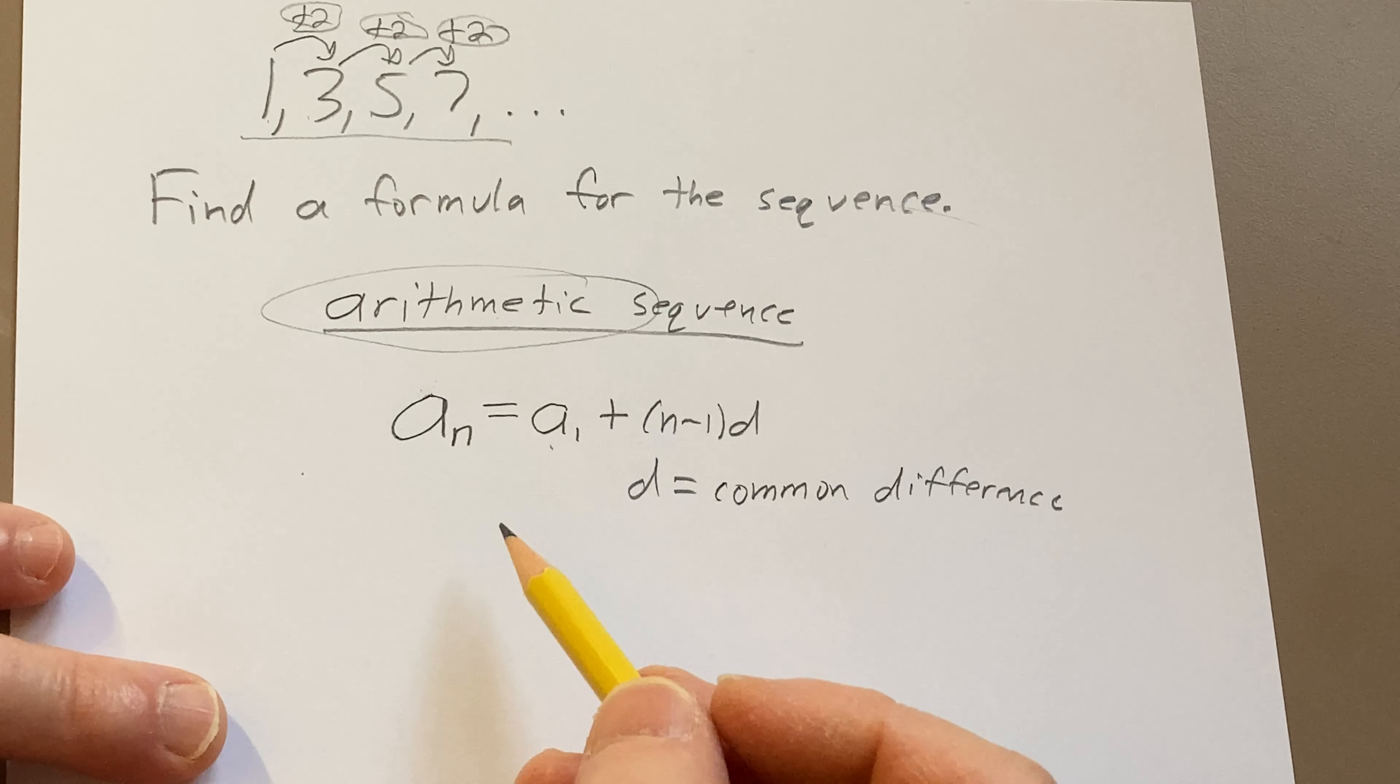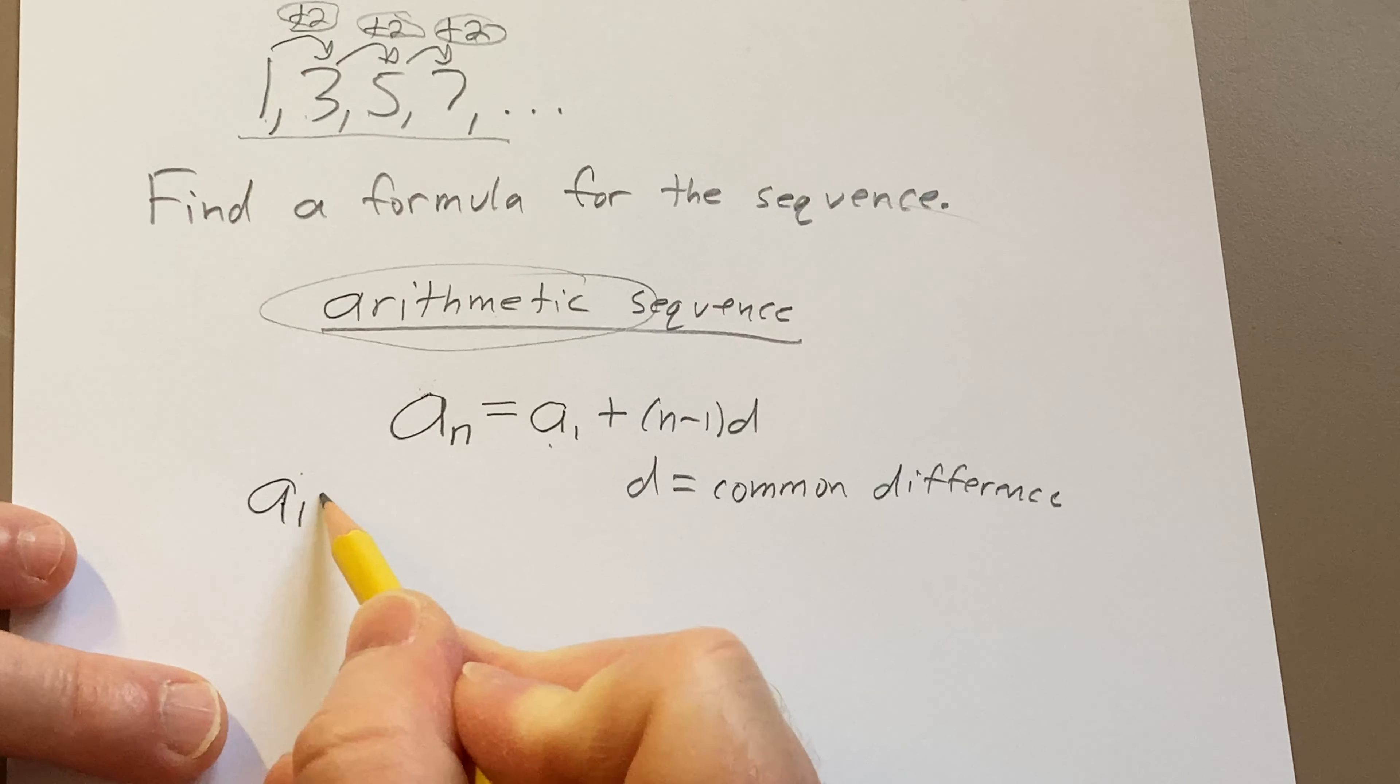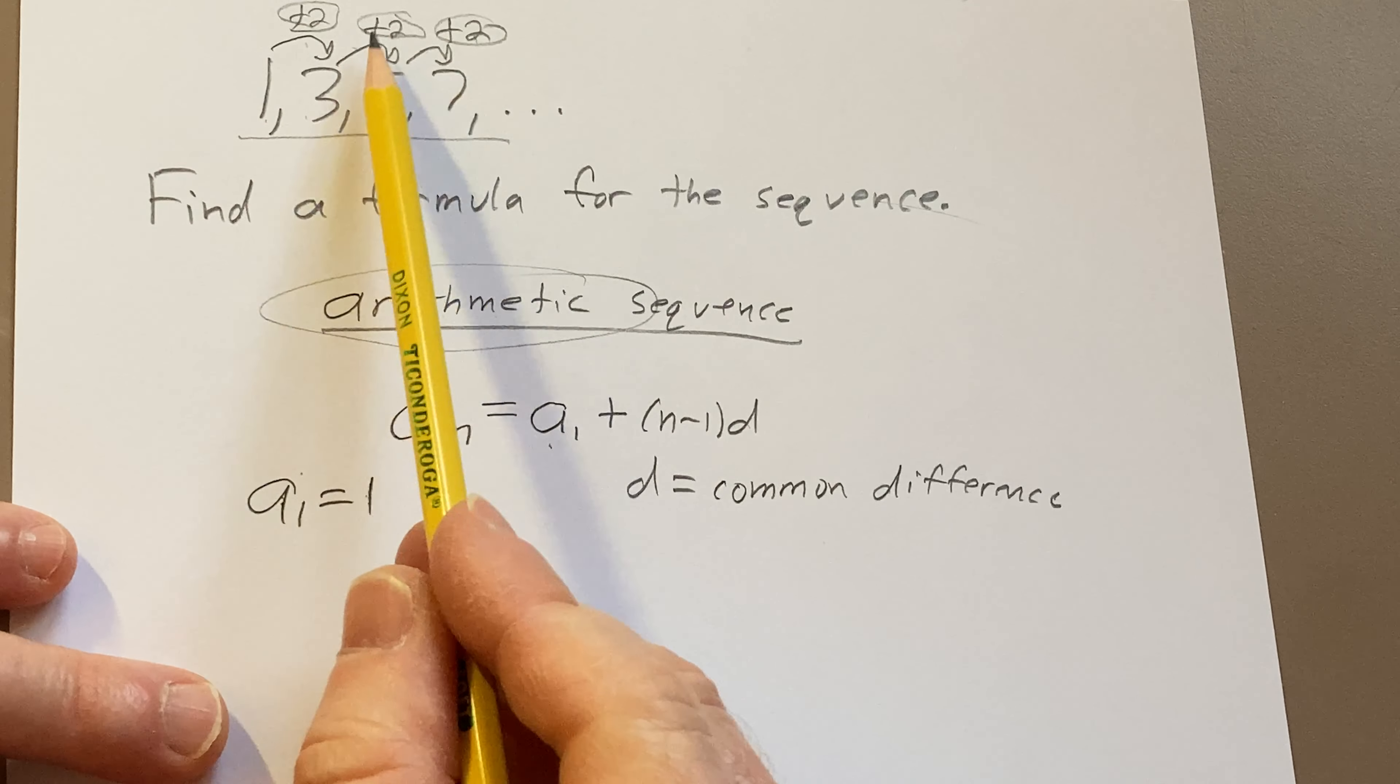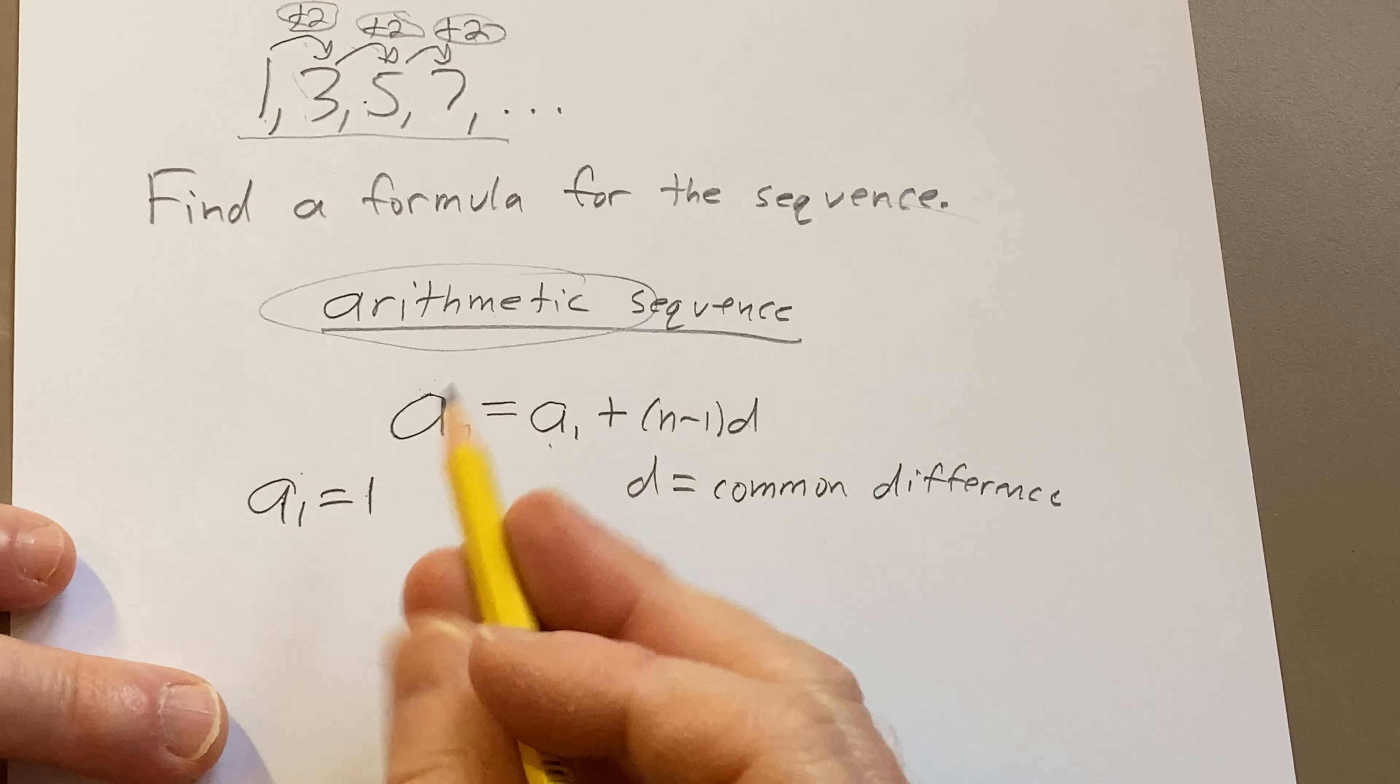Alright, so a sub 1 is the first term, which we know is 1. And the common difference that was a key giveaway to determine that it was arithmetic, it's 2, because we're just adding 2 over and over again.